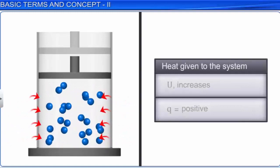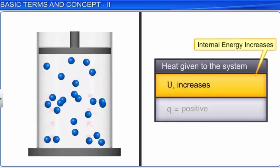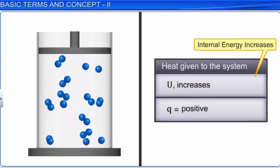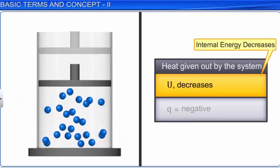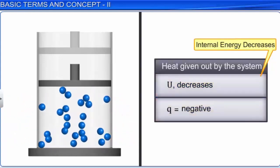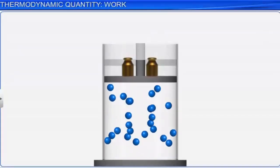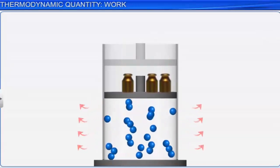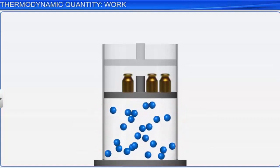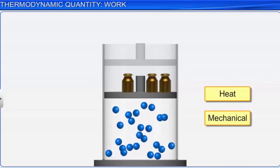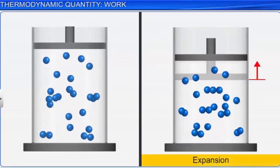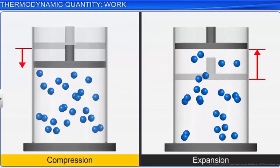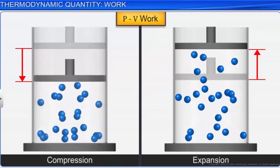If heat transfers from the surroundings to the system, then internal energy increases and Q is considered as positive. On the other hand, if heat transfer takes place from the system to the surroundings, then internal energy decreases — that is, Q is negative. When a change in the state of a system occurs, energy is transferred either to or from the surroundings as heat or mechanical work. In thermodynamics, the only type of work generally considered is the work done in expansion or compression of a gas, known as pressure-volume work, or PV work.